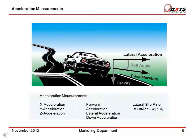Now we shall look at the acceleration measurements. The RT measures the x, y and z acceleration, as well as forward, lateral, down and lateral slip rate. The RT accelerometers measure in the x, y, z directions of the vehicle.